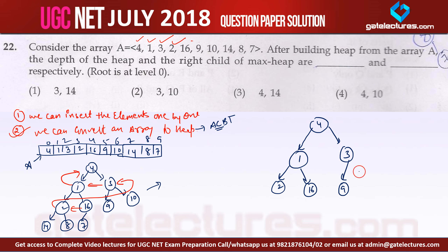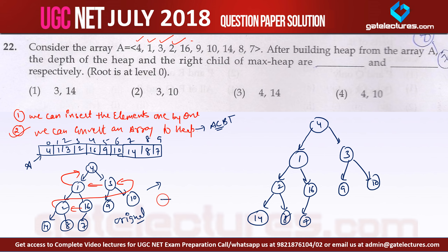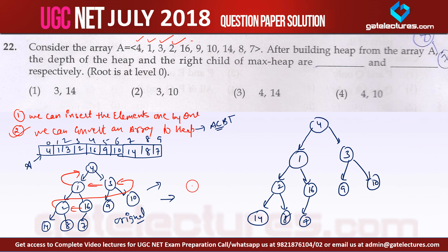The redrawn tree shows 9, 10, 14, 8, and 7 at the lower levels. Starting the conversion: the subtree with 16 already satisfies the max heap property. For the subtree rooted at 2, since 14 is the maximum, 14 moves up and 2 moves down. For the subtree rooted at 3, 10 is the maximum, so 10 comes up and 3 goes down.